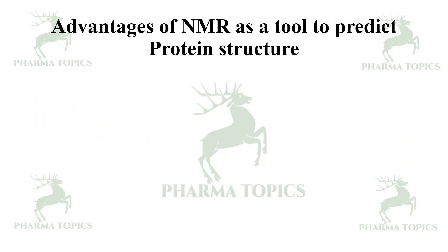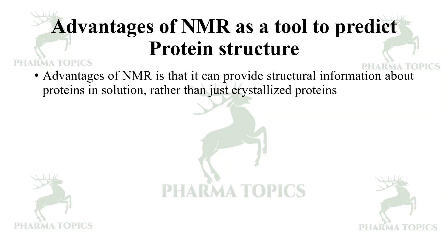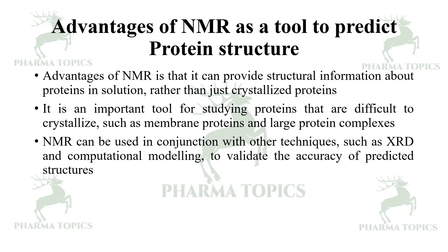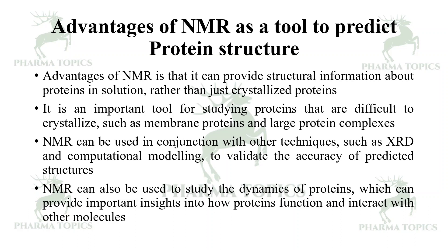The advantages of NMR as a tool to predict protein structure include: it can provide structural information about proteins in solution rather than just crystallized proteins — importantly, hydrogen is not represented in crystallized protein structures. It is an important tool for studying proteins that are difficult to crystallize, such as membrane proteins and large protein complexes. NMR can also be used in conjunction with other techniques such as X-ray diffraction and computational modeling to validate the accuracy of predicted structures, and to study the dynamics of proteins, providing insights into how proteins function and interact with other molecules.